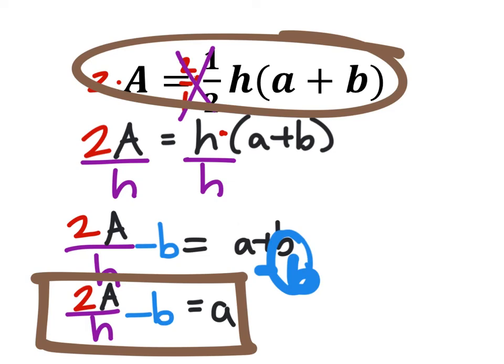And by the way, just because some of you guys realized, this is how you guys would find the area, which is why that's a capital A. You'd find the area of a trapezoid this way, where a and b, the lowercase ones, are the base values of the trapezoid.